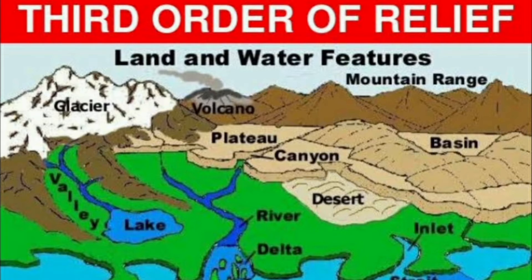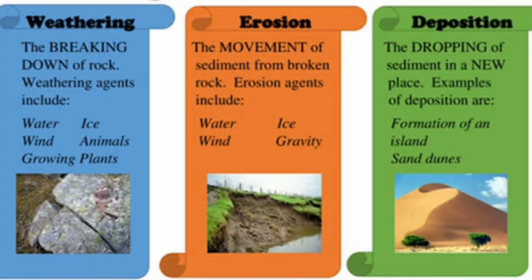Carved mountains, valleys, deltas, sand dunes, etc. are the best examples of third order landforms. For the formation of third order landforms, we have processes like weathering, erosion, transportation, and deposition.